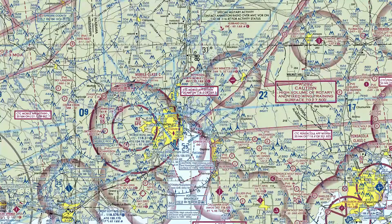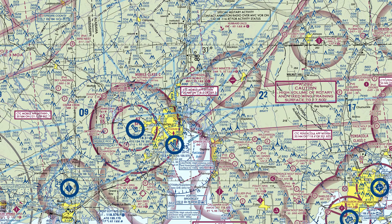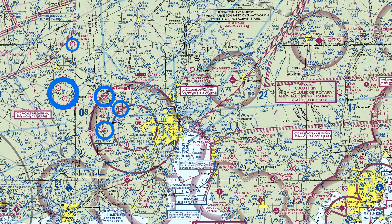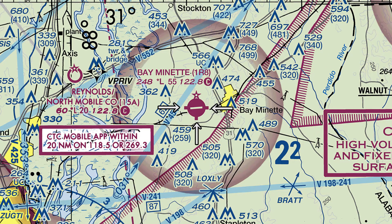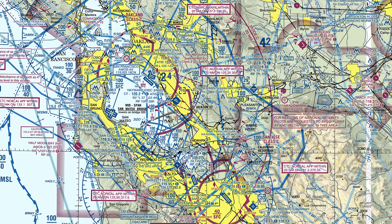Airports are depicted as circles unless the runways are longer than 8,100 feet, in which case the runway is depicted by rectangles. Blue airports are tower-controlled and magenta airports don't have a control tower. A filled circle means the airport has a paved runway; an unfilled circle is an unpaved airport. Circles with an R are private or restricted airports requiring permission to land. Tick marks around the airport indicate fuel is available, a star means there's a rotating beacon, and a circle with an X means the airport is closed.